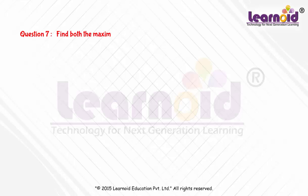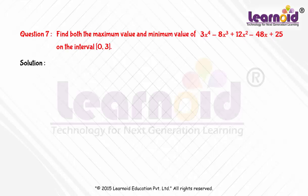Find both maximum value and minimum value of 3x to the power 4 minus 8x cube plus 12x square minus 48x plus 25 on the interval [0,3]. Let f(x) equal 3x^4 - 8x^3 + 12x^2 - 48x + 25.